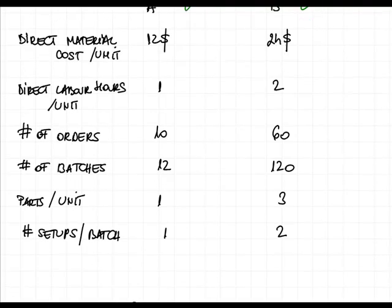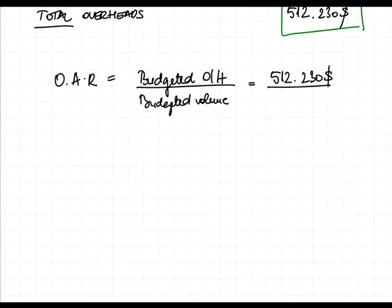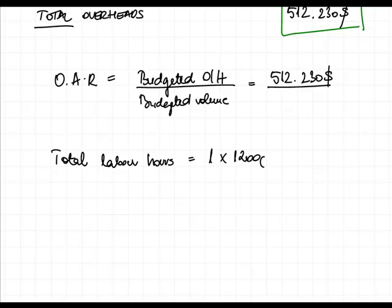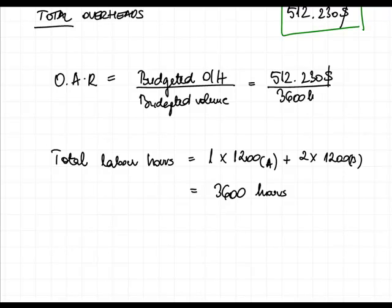Product A uses one labor hour and product B uses two labor hours per unit. Based on annual production, the total labor hours during the year amount to 3,600 hours. The overhead absorption rate therefore works out to approximately $142 per hour.